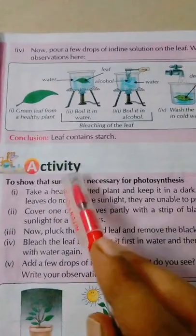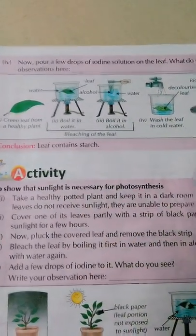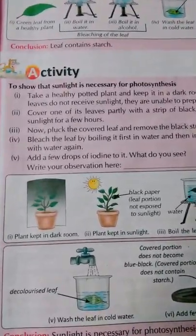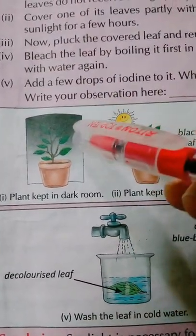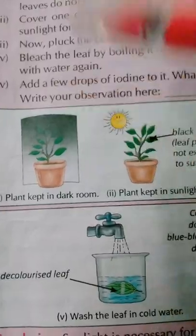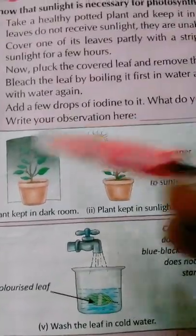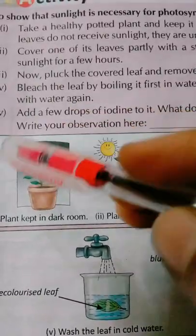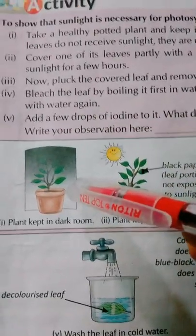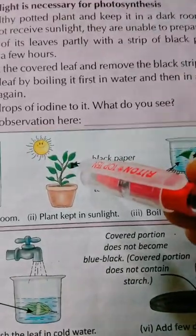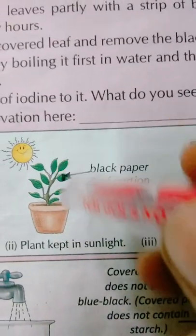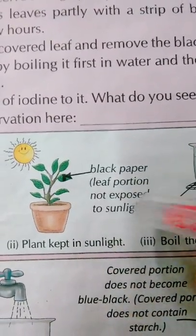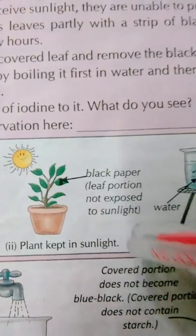The next activity is to show that sunlight is necessary for photosynthesis. First, we need to keep a healthy potted plant in a dark room for a few days so it uses up any stored starch. Then, we take the plant into sunlight and cover part of a leaf with a black paper strip, so that portion of the leaf is not exposed to sunlight.